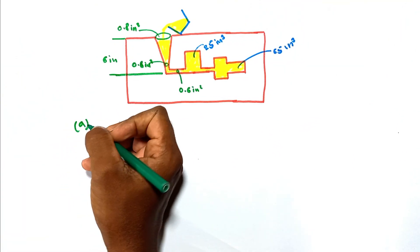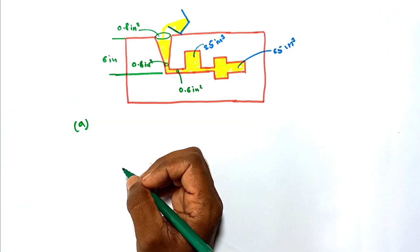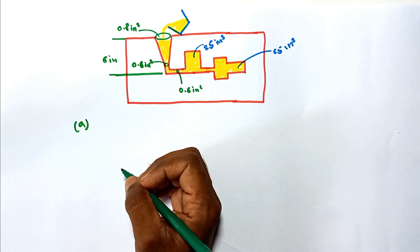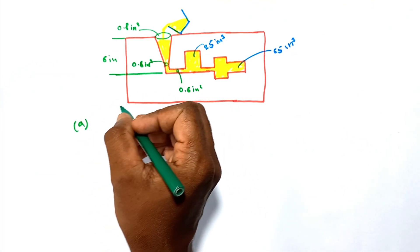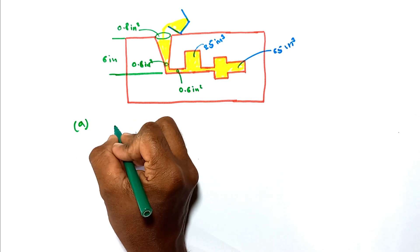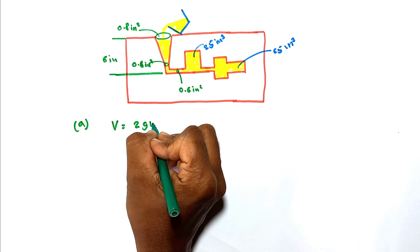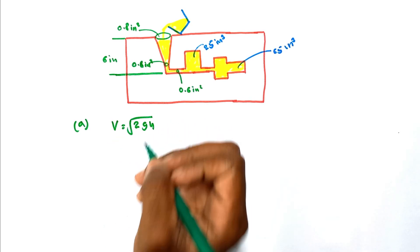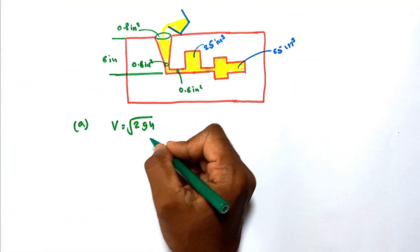The first part of the problem asks for the theoretical velocity and the flow rate at the base of the down sprue. We have the equation to determine this velocity: v = √(2gh). This equation is used to calculate the velocity in a flow system.